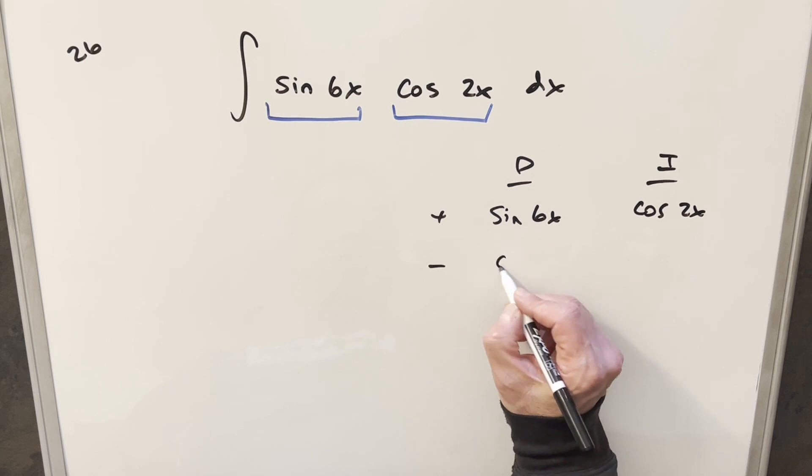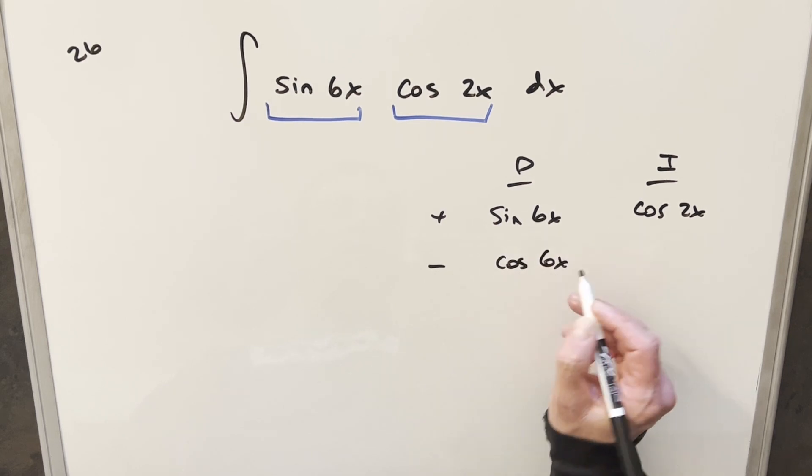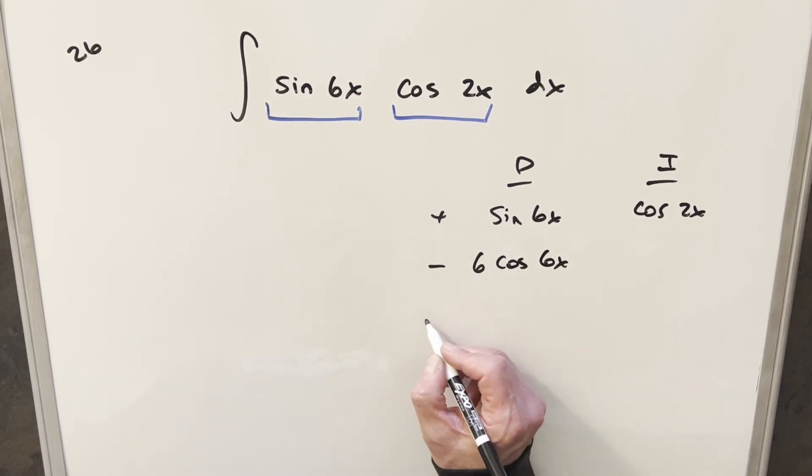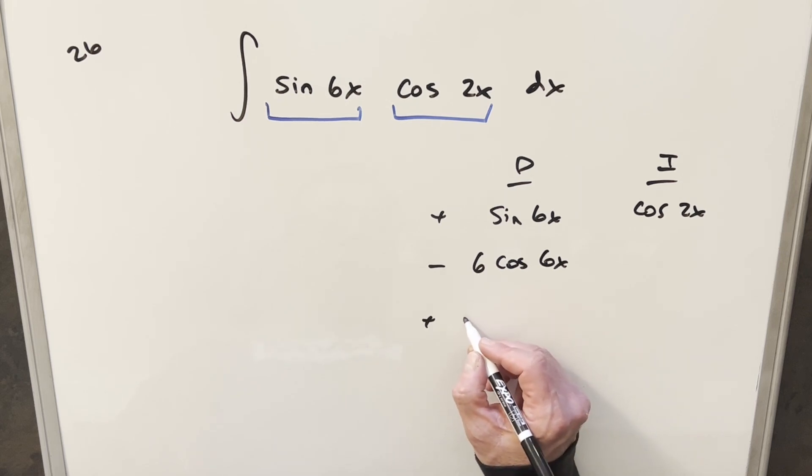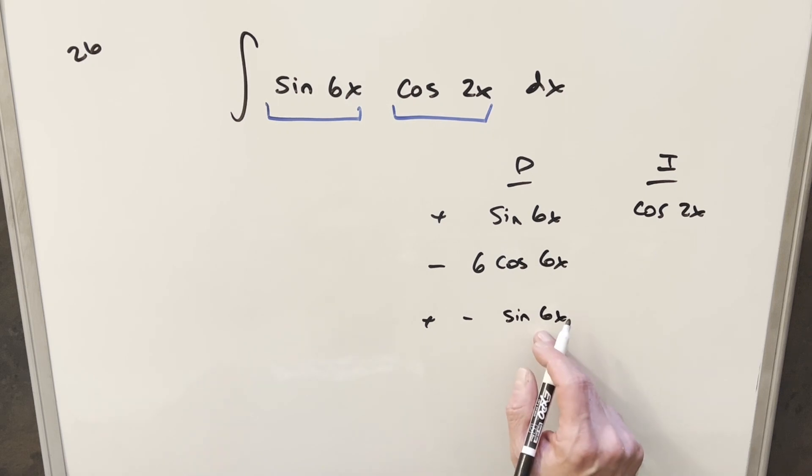So derivative here, this is going to be cosine 6x, but I need to pull out a 6. And then doing it one more time, this is going to be a minus in front, sine 6x. But then pulling a 6 out again, this is going to give me 36 in front.